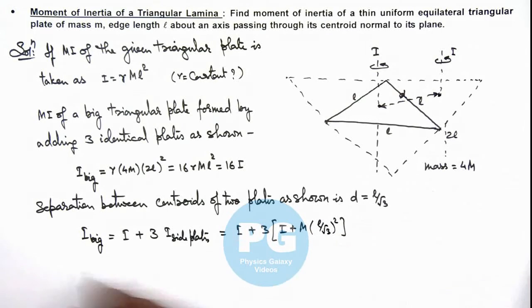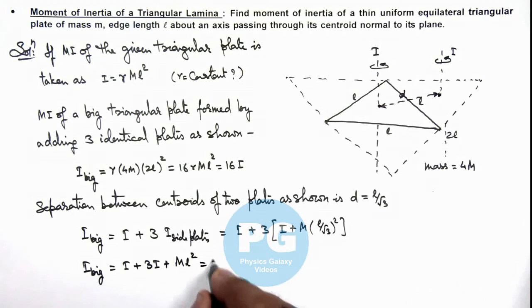So here this becomes I_big = I + 3I + ml². Now in this situation this value is 4I + ml².